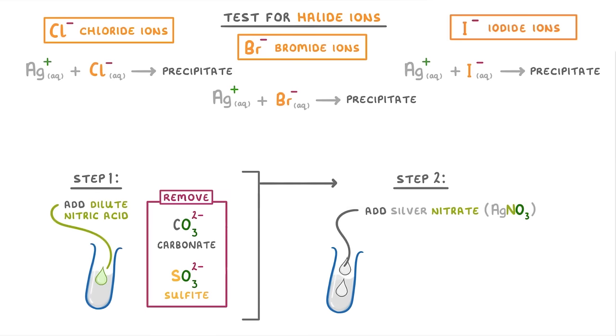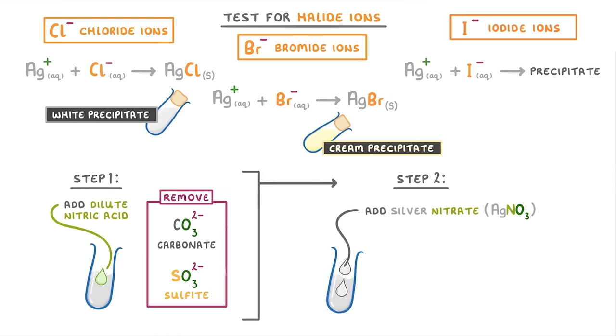So if it reacts with a chloride ion, it will form silver chloride, which is a white precipitate. If it reacts with a bromide ion, it will form silver bromide, which is a cream precipitate. And if it reacts with an iodide ion, it will form silver iodide, which is a yellow precipitate.